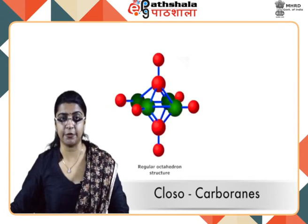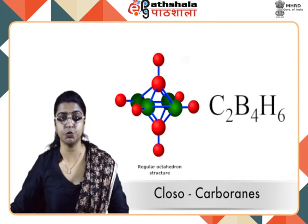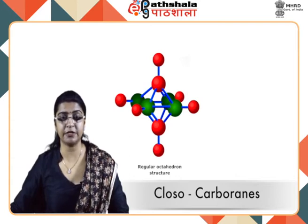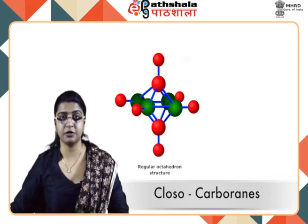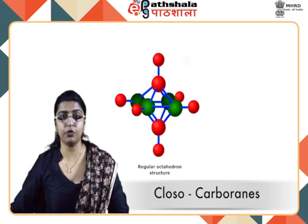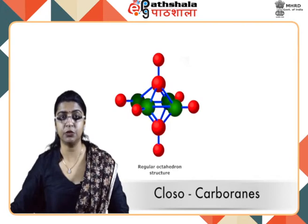Let us see the structures of closo carboranes. We start with 1,6-dicarba-closo-hexaborane having the formula C2B4H6. Here the two carbon atoms are named as dicarba, and because in all we have six atoms including four borons and two carbons, we call it hexaborane — hence the name 1,6-dicarba-closo-hexaborane. It has a regular octahedron structure where four boron atoms are in one plane and two carbon atoms are above and below that plane. It is a closed symmetrical structure and hence a closo carborane.